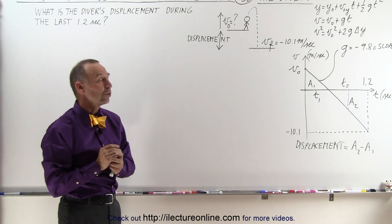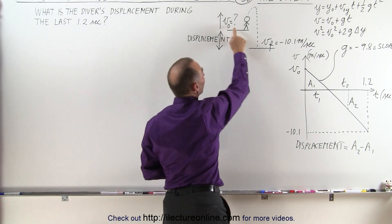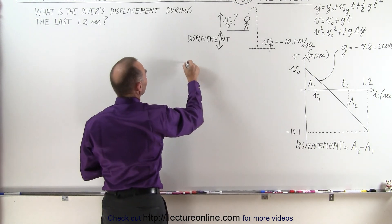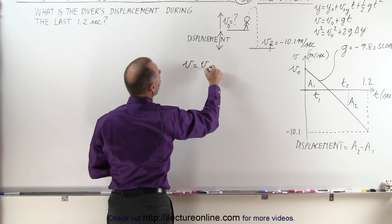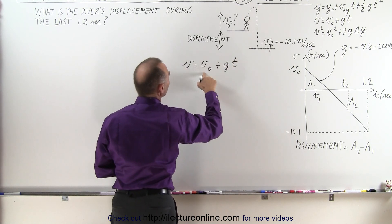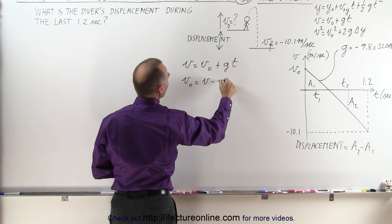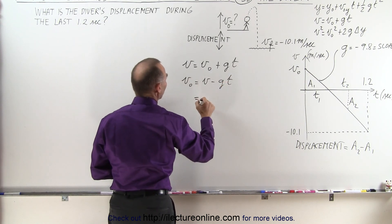Well, the first thing we want to do is try to find the initial velocity. To do that, we're going to use the second equation right here. We can write that v equals v initial plus g times t, and solving this for v initial, we get v initial is equal to v minus gt.